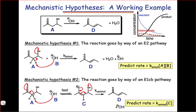Here's where I would challenge you to decide how you might try to distinguish between these two mechanistic pathways, and there are a variety of approaches that you could take here. One is to notice that in the first mechanistic hypothesis, cleavage of a C-H bond is a critical part of the reaction.